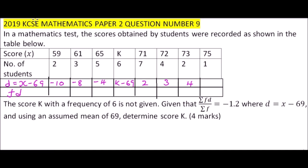Then we have 71 minus 69 that will give you 2, 72 minus 69 that will give you 3, 73 minus 69 that will give 4. Now we multiply f by the deviation. This will give us 2 times minus 10 is minus 20, this is minus 24, and this is minus 20. This will be 6K minus, when you multiply 69 by 6 that will give you 414. Then 7 times 2 you get 14, here you get 12, here you get 8, and here you get 6. When you add up the frequency you get